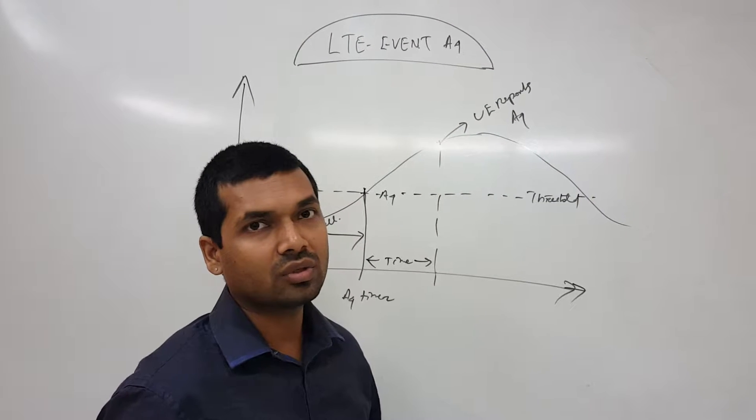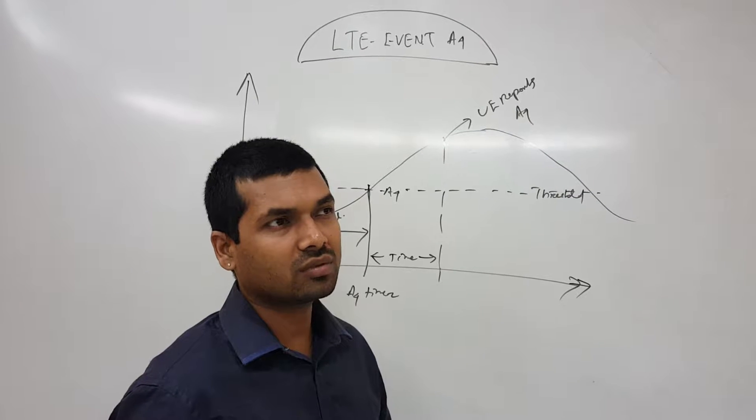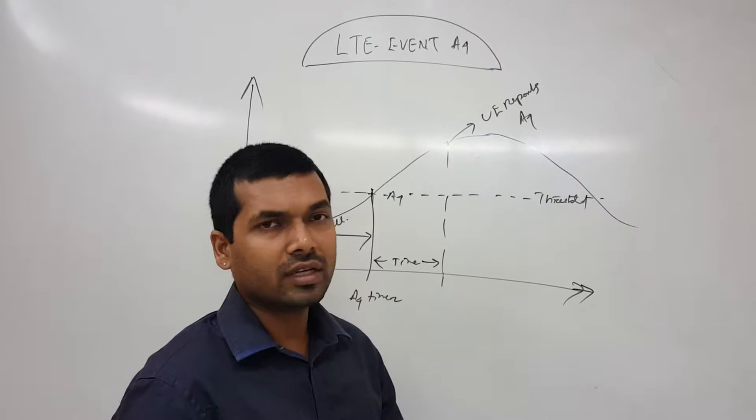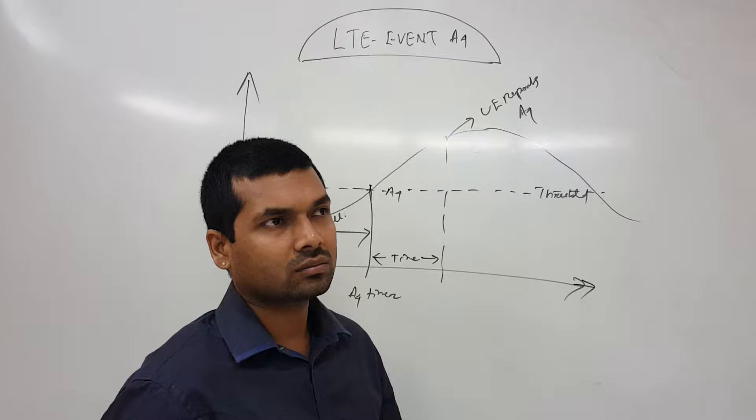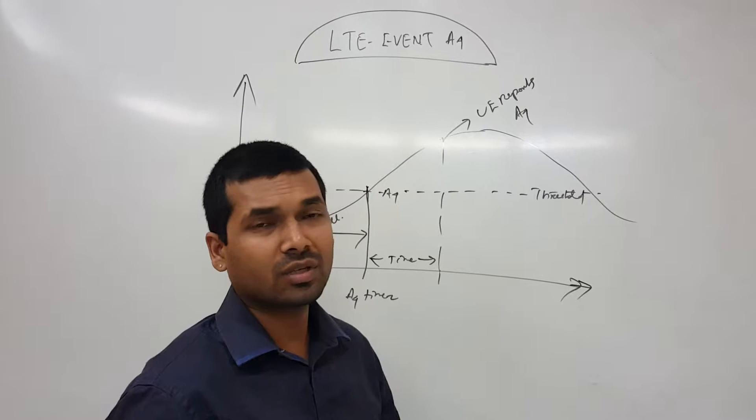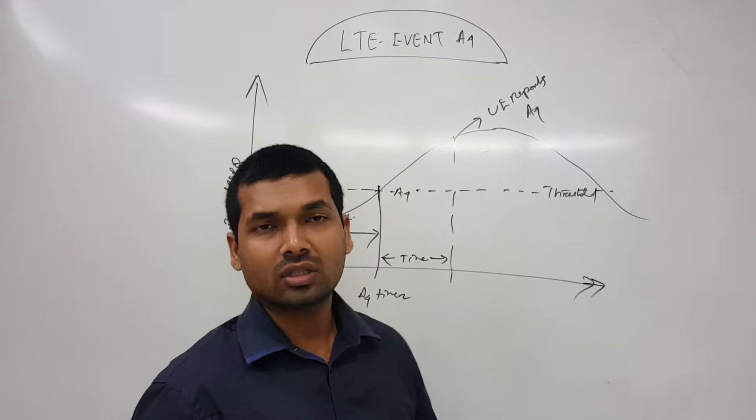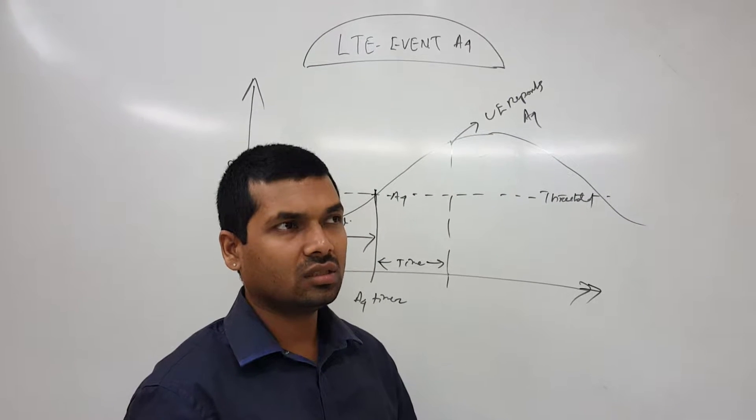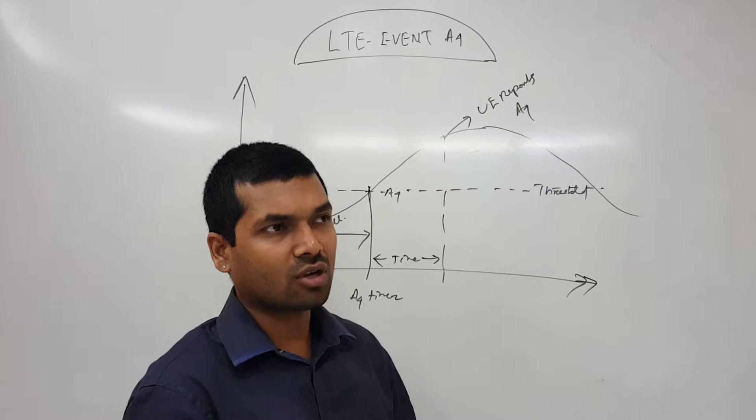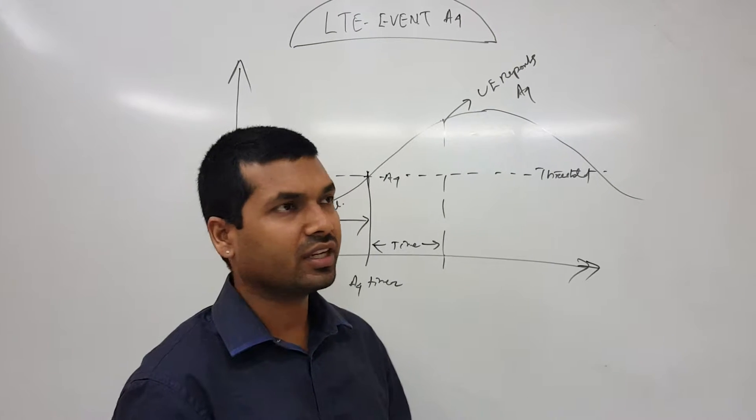In A1, it was a good range where we now need to do measurements. In A2, serving becomes bad, so we start searching other frequencies or the neighbors. In A3, neighbor becomes offset better than serving.